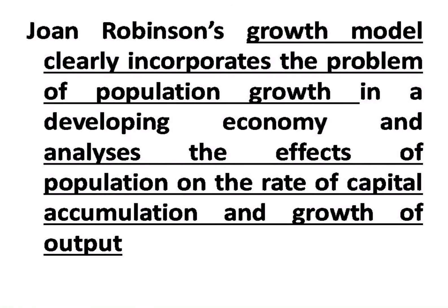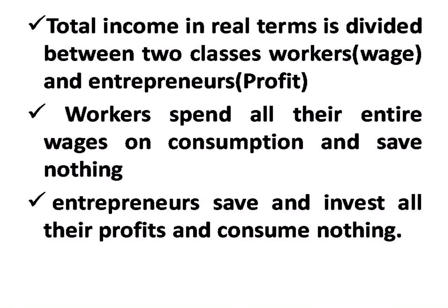Joan Robinson's growth model clearly incorporates the problem of population growth in developing countries, the rate of capital accumulation, and the capital-output ratio. Total real income is divided between two classes: workers, who receive wages, and entrepreneurs, who earn profits. Workers spend all their wages on consumption and save nothing, while entrepreneurs save and invest and do not consume their entire profit.